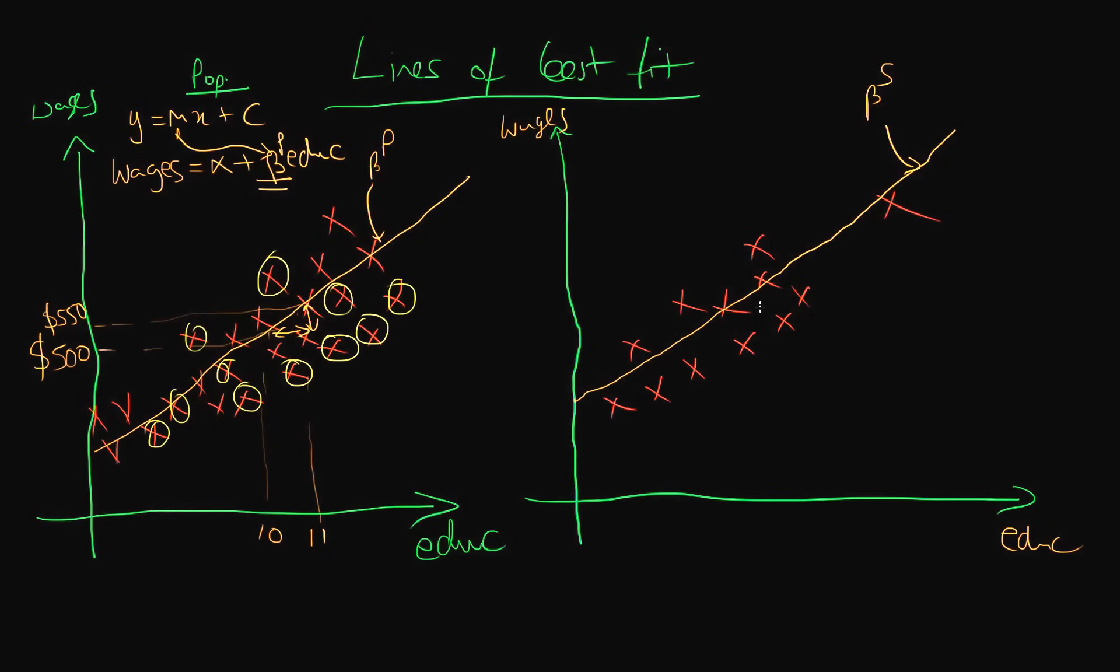But implicit when we're actually drawing this line of best fit, what we're actually trying to do is we are trying to come up with an estimate of our population parameter.